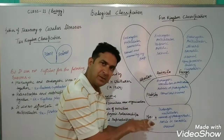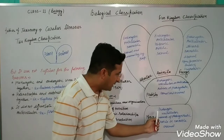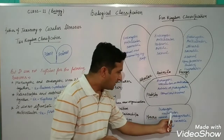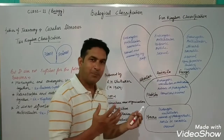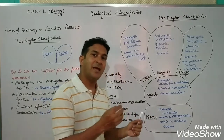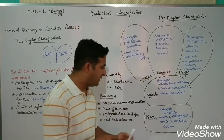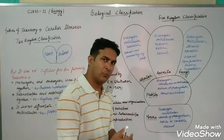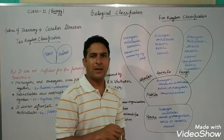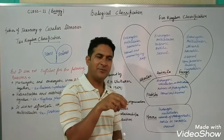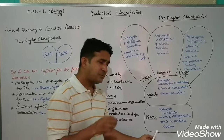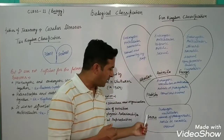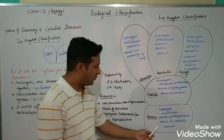In Kingdom Monera, which forms the foundation of classification, the organisms are prokaryotic, unicellular (single-celled). They have the power of absorption, and some monerans also have the power of photosynthesis. Their mode of nutrition varies — some absorb food from surroundings, some synthesize their own food. They can be motile or non-motile, moving by flagella or remaining stationary. They reproduce asexually.